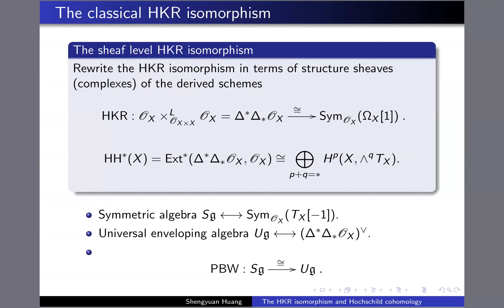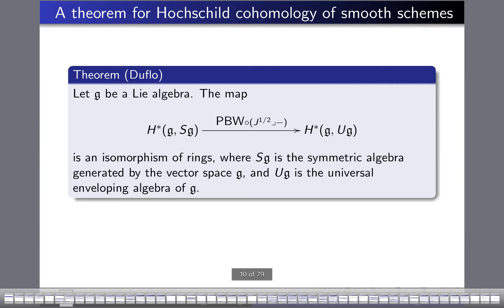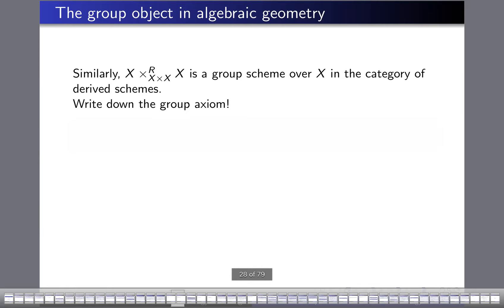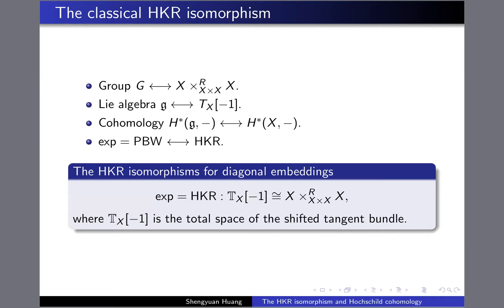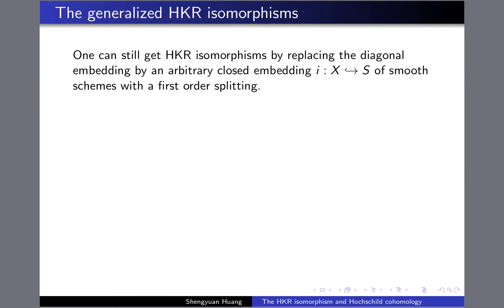You can translate things from one side to the other: the Kontsevich theorem and Duflo's theorem can just be translated to each other in this dictionary. There are two natural ways to generalize the HKR isomorphism: one is to generalize it to orbifolds, the other is to generalize it to arbitrary closed embeddings. The HKR isomorphism is related to the diagonal embedding, so in order to generalize it to orbifolds, we need to generalize it to an arbitrary embedding first.